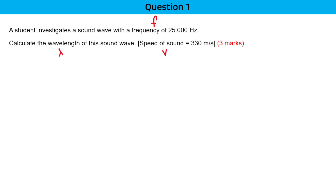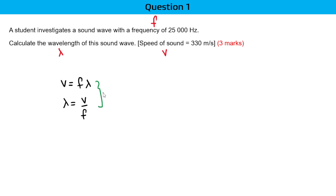Let's use the equation V equals F lambda. We want to find lambda, so it would be lambda equals V over F. In the exam, you would be awarded 1 to 2 marks for writing this proper equation.